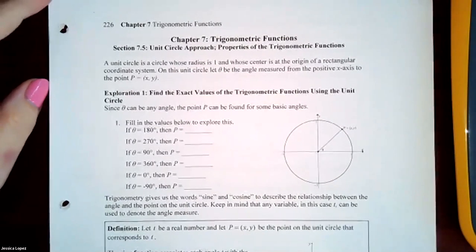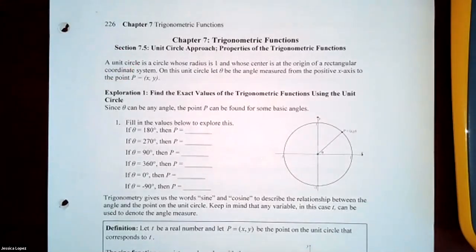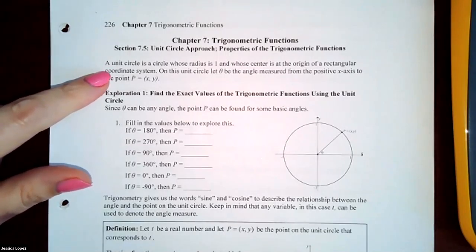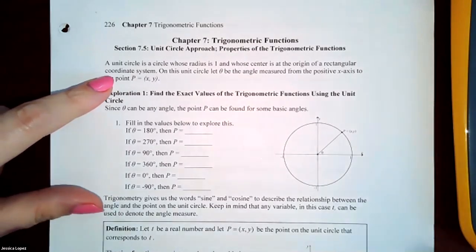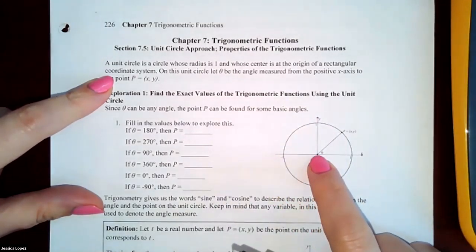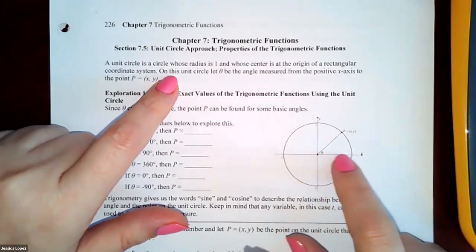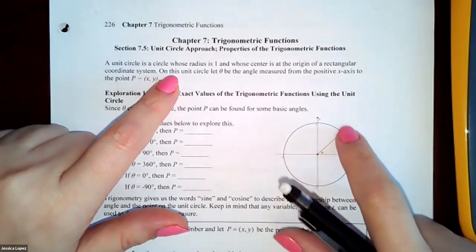We're going to begin chapter 7, section 7.5, the unit circle approach and the properties of the trigonometric functions. A unit circle is a circle whose radius is 1 and whose center is at the origin of a rectangular coordinate system. Here's our coordinate system with the x-axis and y-axis. There's the center at (0,0), and then you have an angle. The initial side is on top of the x-axis, and the terminal side will intersect the unit circle.